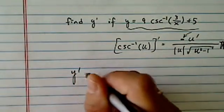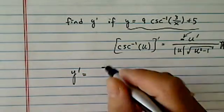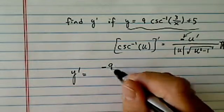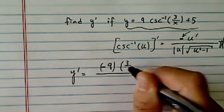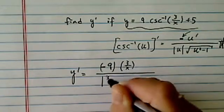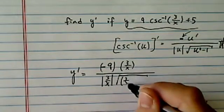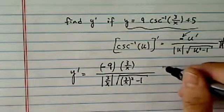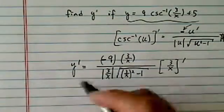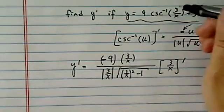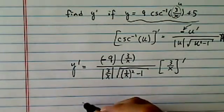All right, so let's get started. Y prime is equal to minus. So let's get this form in here. Minus 9 times u is 3 over x. 3 over x absolute value. And then we have 3 over x squared minus 1. And then we're going to take 3 over x derivative. So first thing all I did is I put it in the form I needed. So treating this one as a u, and I plugged in pretty much everything else along with it.